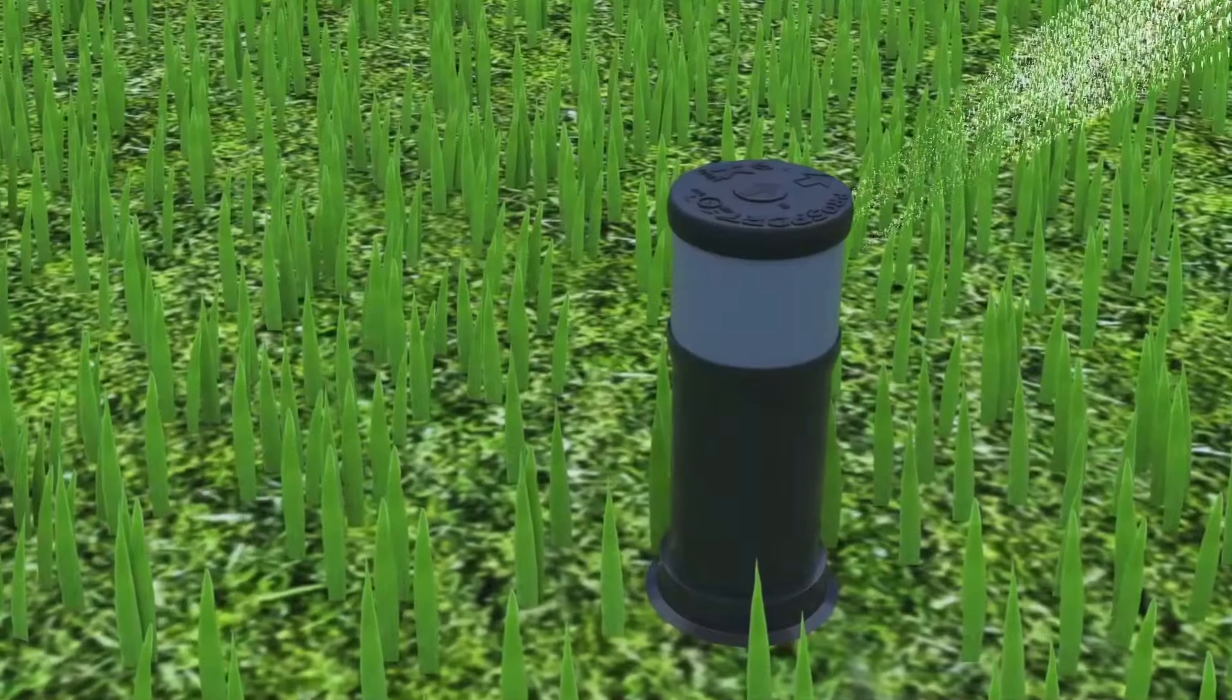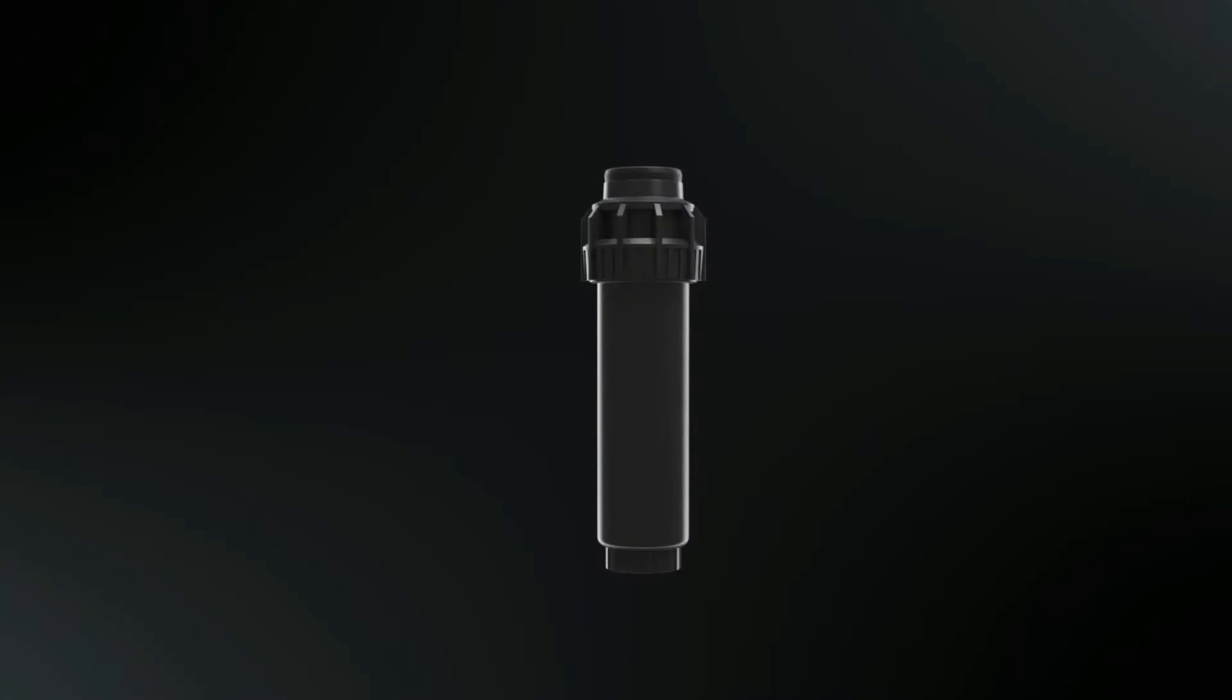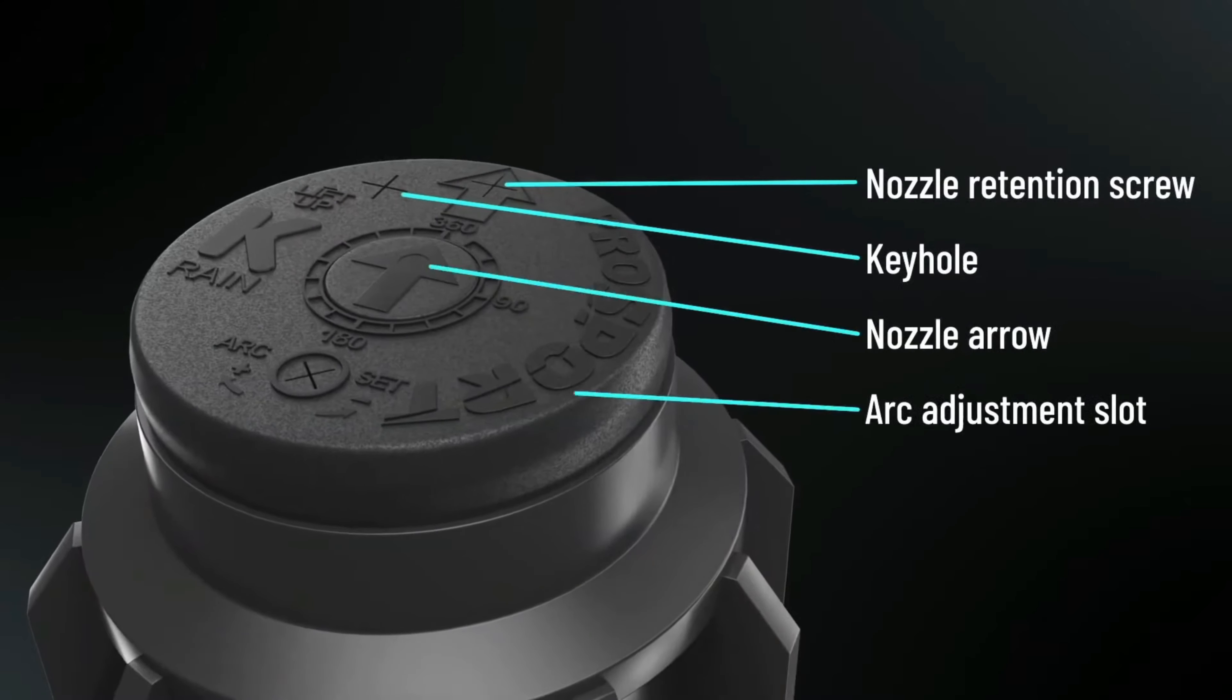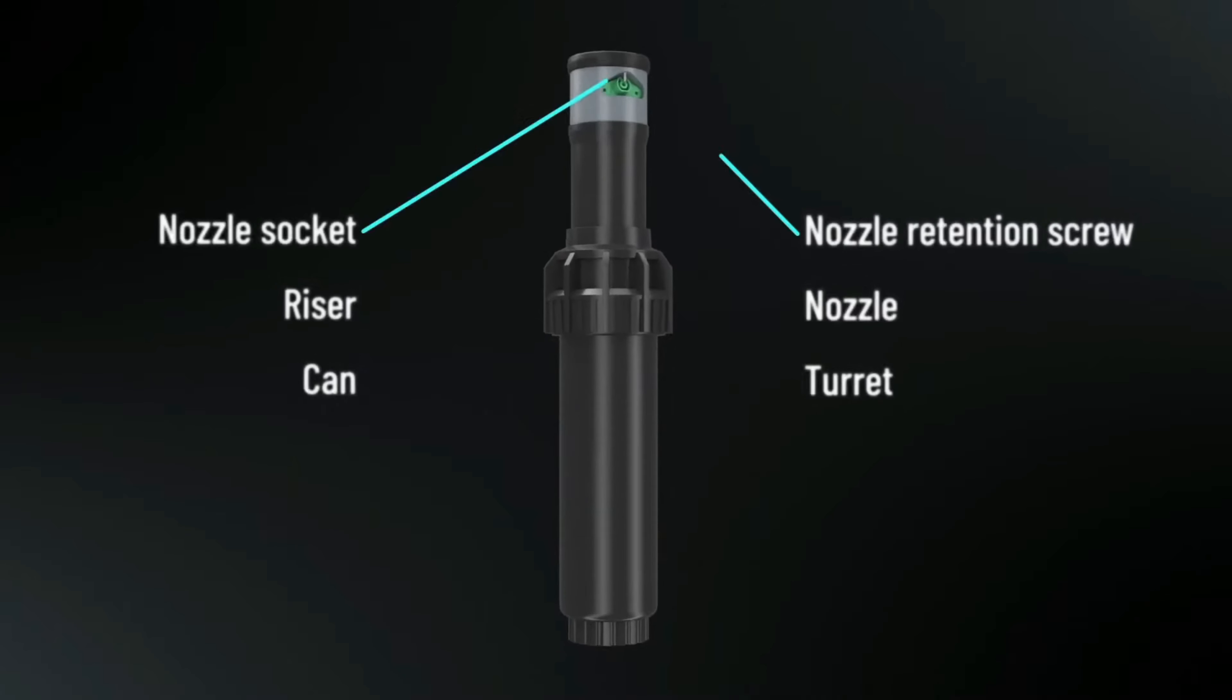This rotor is adjusted from a left start position, meaning it starts from the left and rotates clockwise and then returns. Let's first look at the indicators on the rotor head, and now the parts of the rotor.